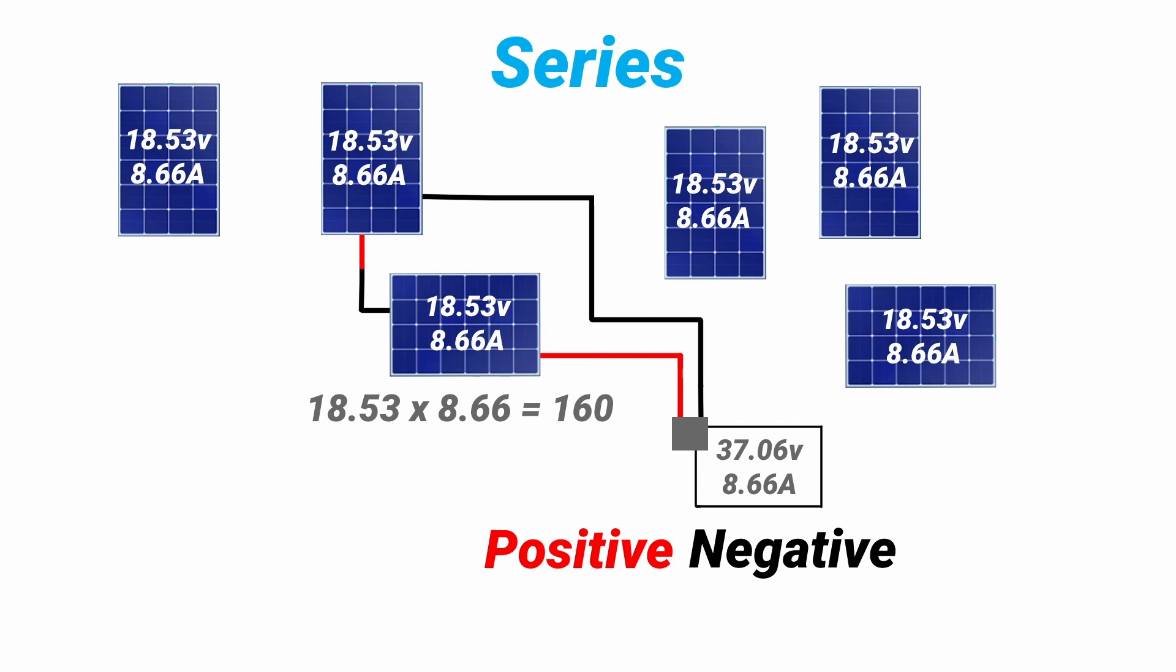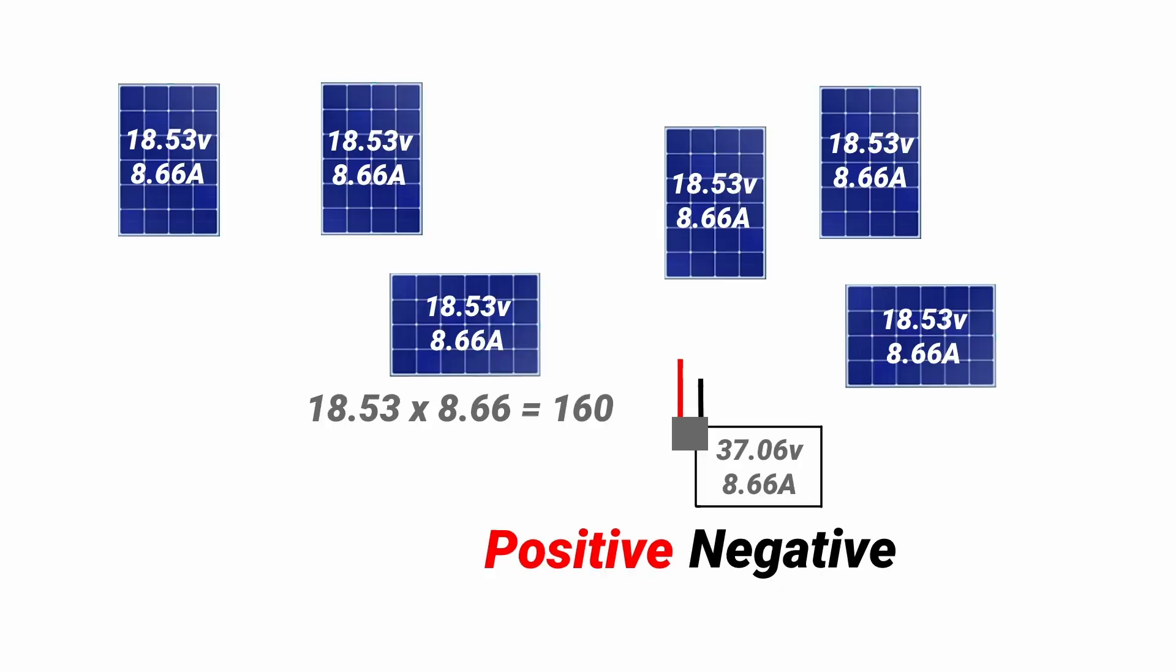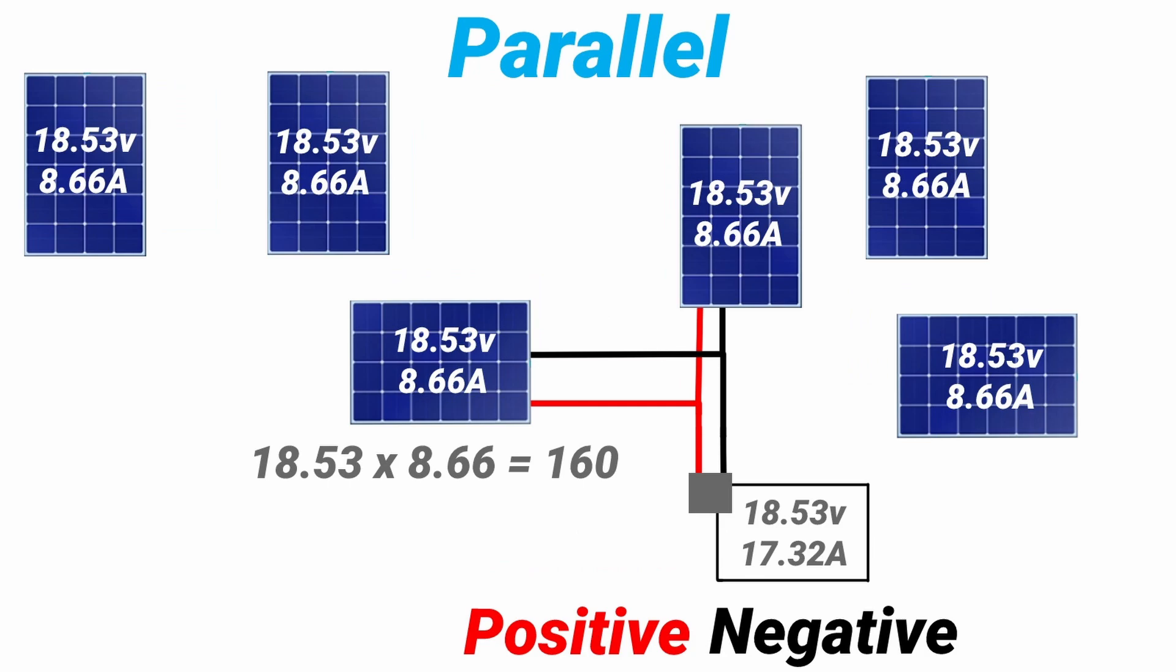This would result in the voltage to double but the amps to stay the same. So the new readings would be 37.06 volts and 8.66 amps. This is how we would hook up the panels in parallel. The new readings would double the amps but keep the voltage the same. So it's the opposite. We're now at 18.53 volts and 17.32 amps.